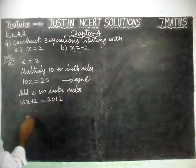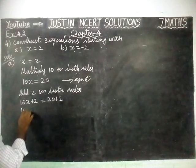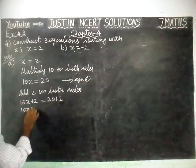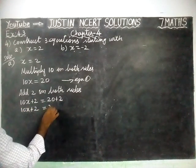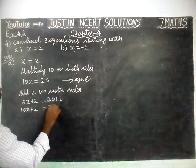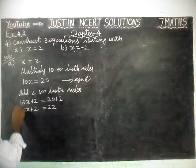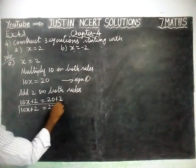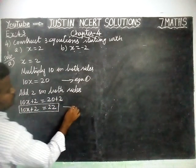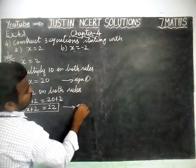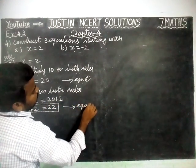We can add these 2. So, 10x plus 2 is equal to 20 plus 2, which is equal to 22. And this is equation 2.